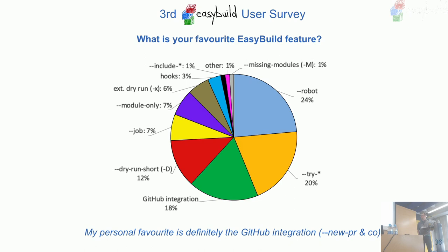What's your favorite EasyBuild feature? Answers are all across the board — some people like the automatic installation of missing dependencies, some like the try toolchain or try software version options. I'm personally in the GitHub integration camp, which Sam will talk about tomorrow. If we didn't have these features, we wouldn't see the growth in contributions we're seeing, and we wouldn't be able to keep up with incoming contributions. There are features not mentioned at all here that I may highlight in Friday's talk.